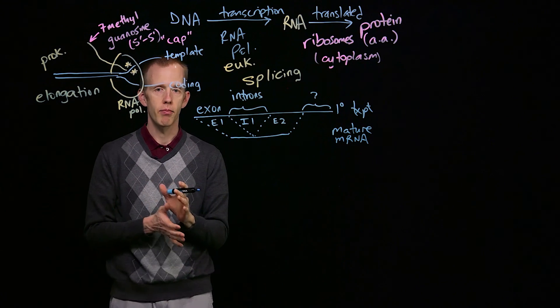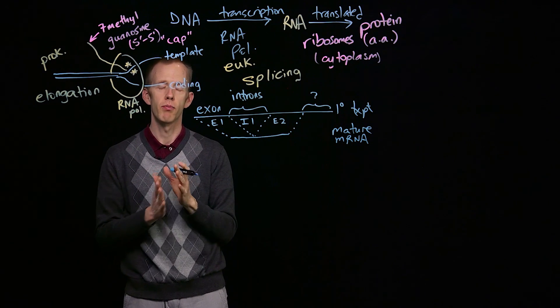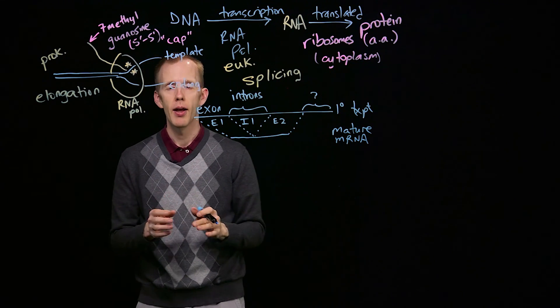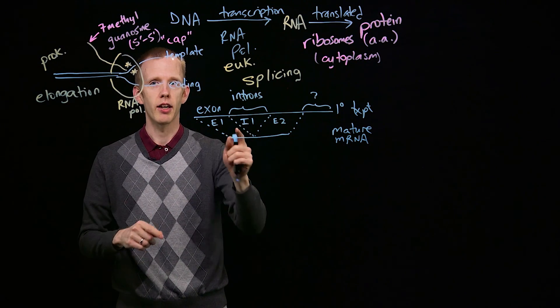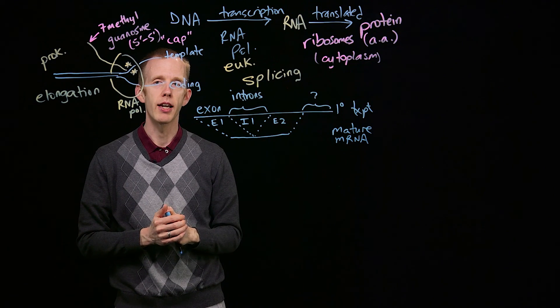So splicing, the third step of eukaryotic messenger RNA processing, capping, splicing, and then 3' poly-A tailing.